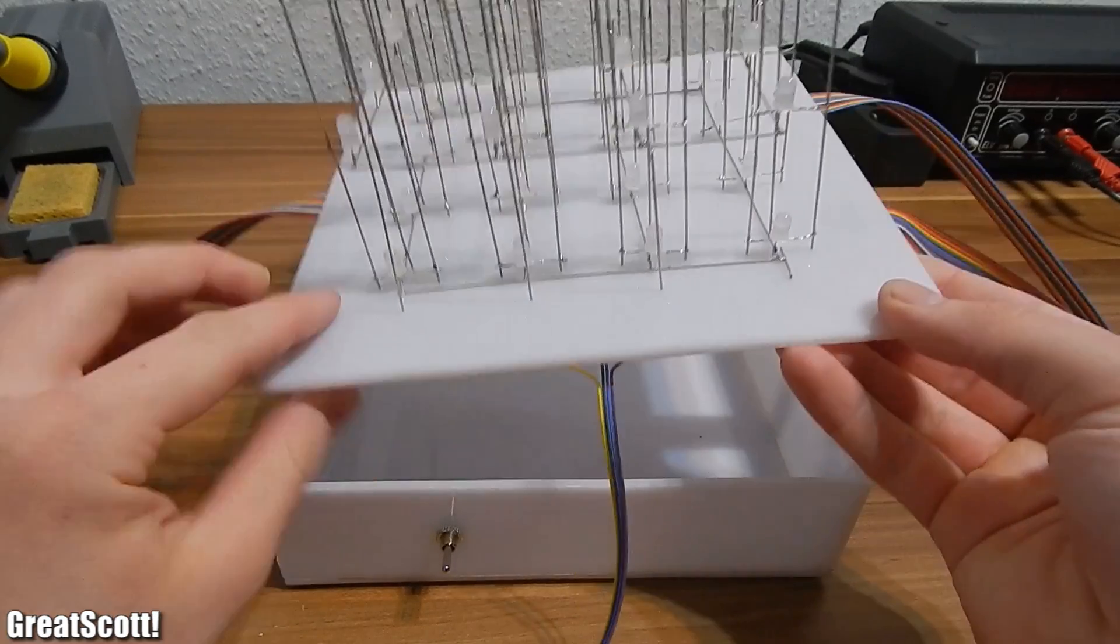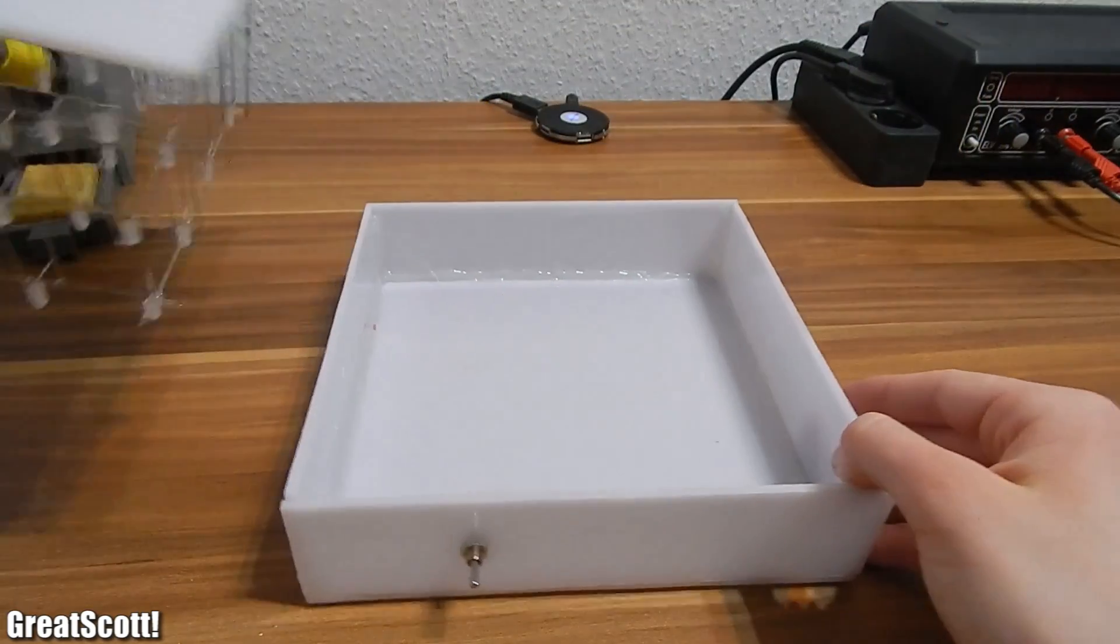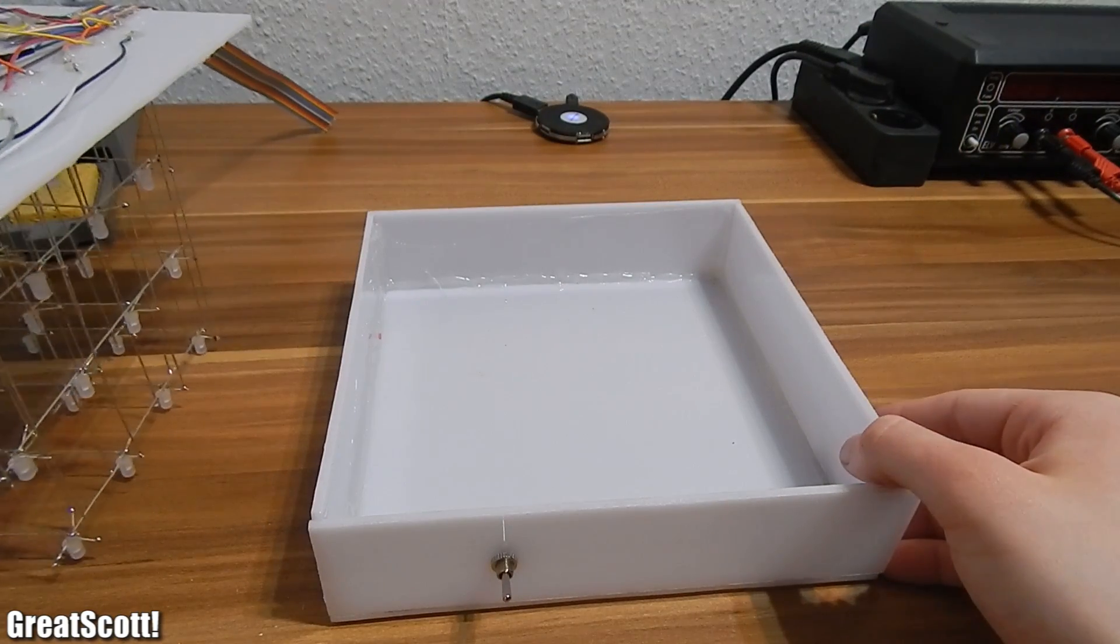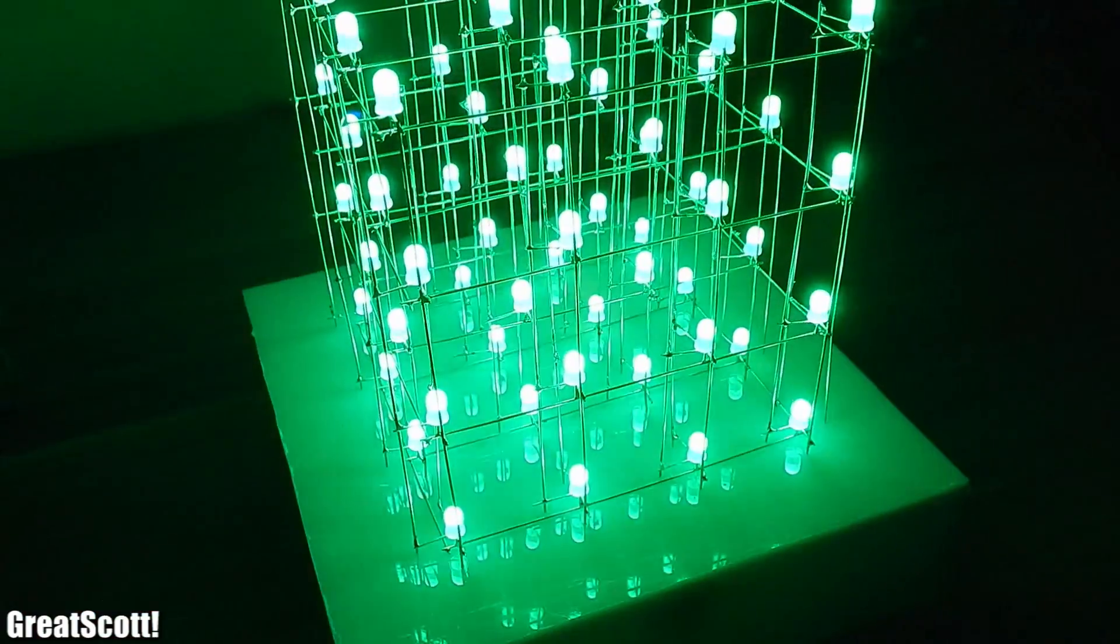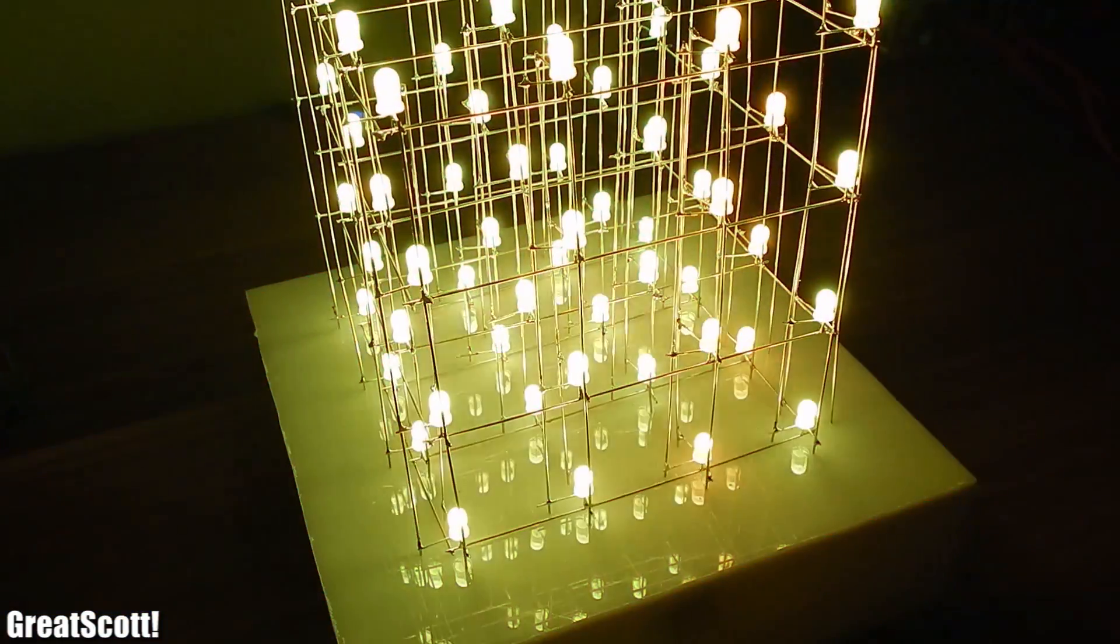After constructing the cube and case in part 1, it's finally time to build the electronic circuit and upload the first test code. At the end of this part, you'll be able to build your own functional 4x4x4 RGB LED cube.